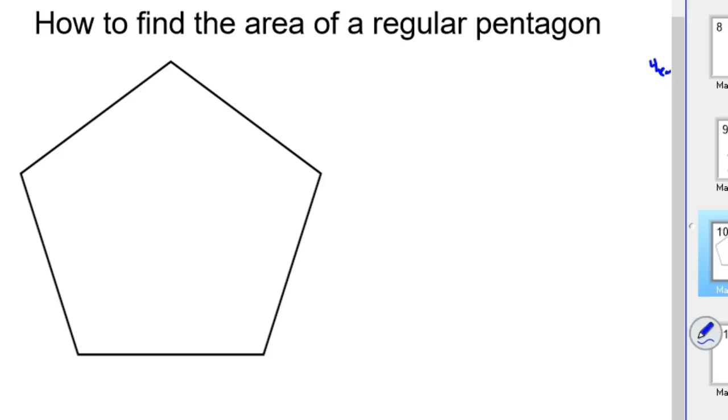All right, how to find the area of a regular pentagon. Now to find the area of a regular pentagon, first off, there is a formula for it. I don't use it very often, but it's good to have. Area of a regular pentagon, and this is any regular polygon, is the perimeter times apothem, and I'll explain what an apothem is here in just a second, all divided by 2.